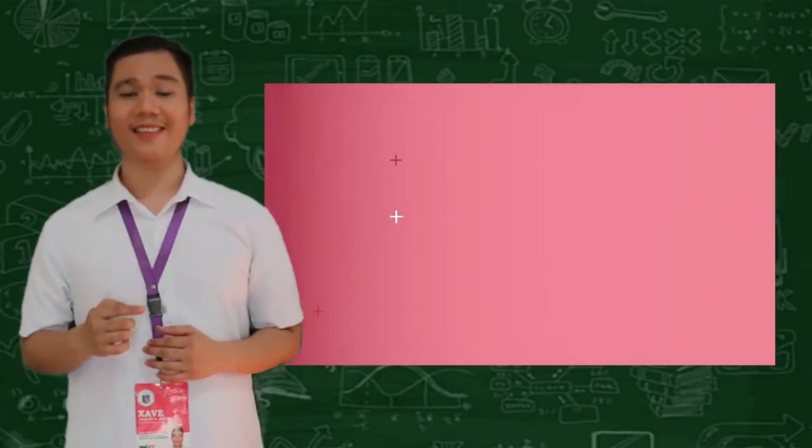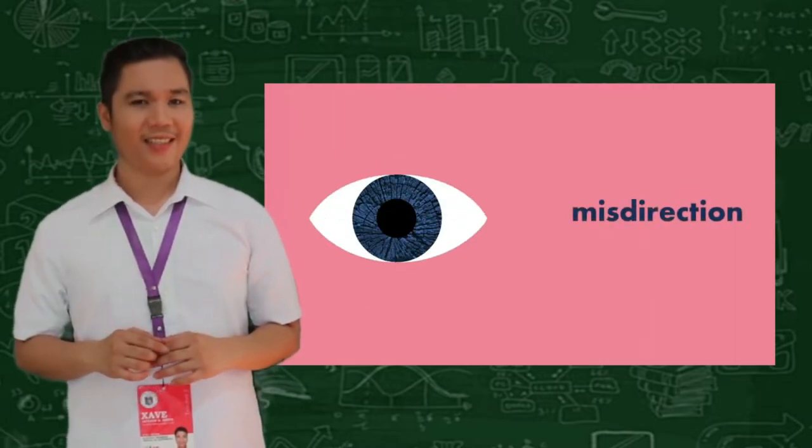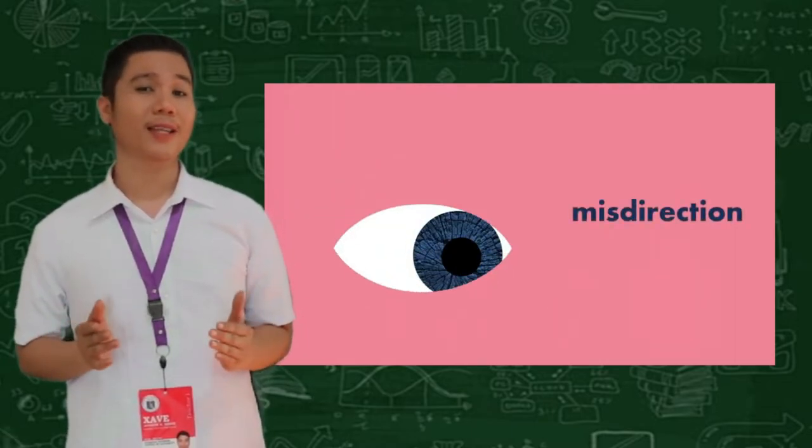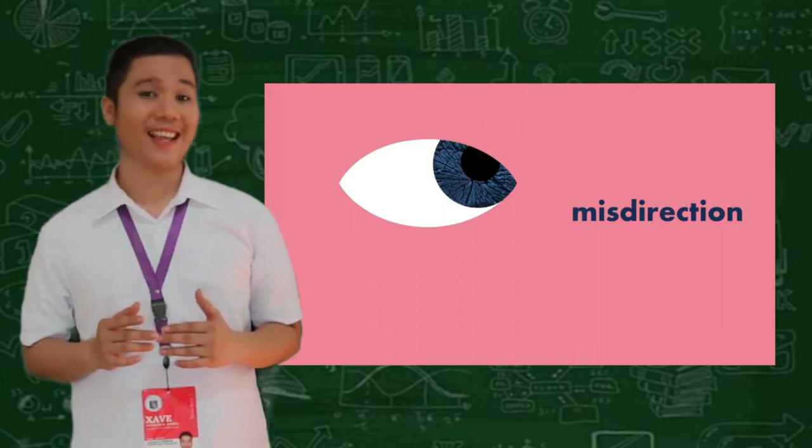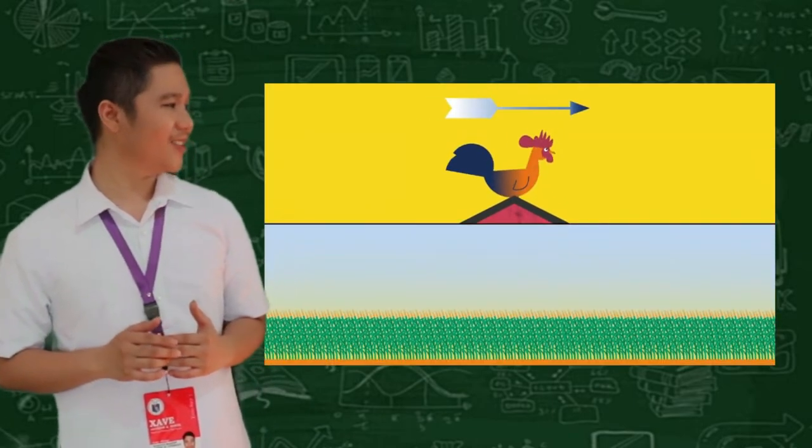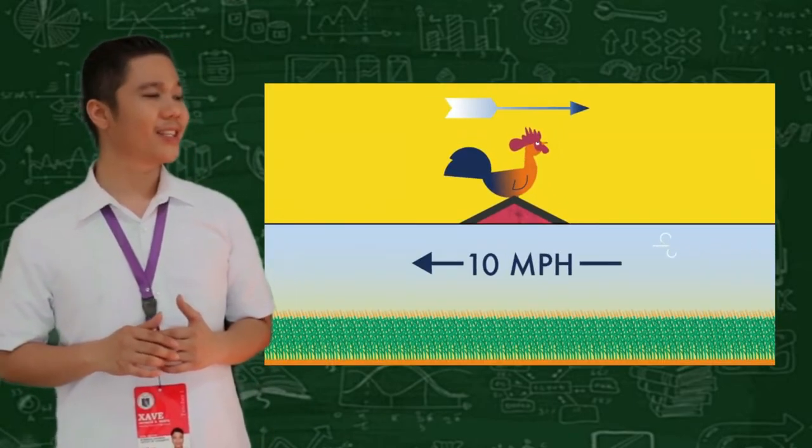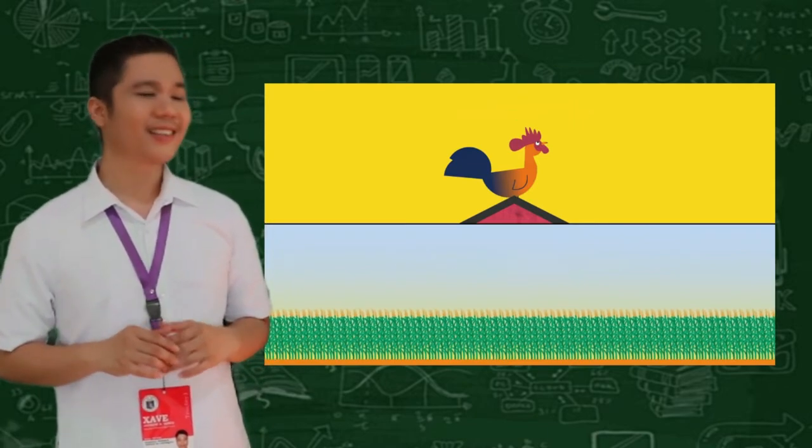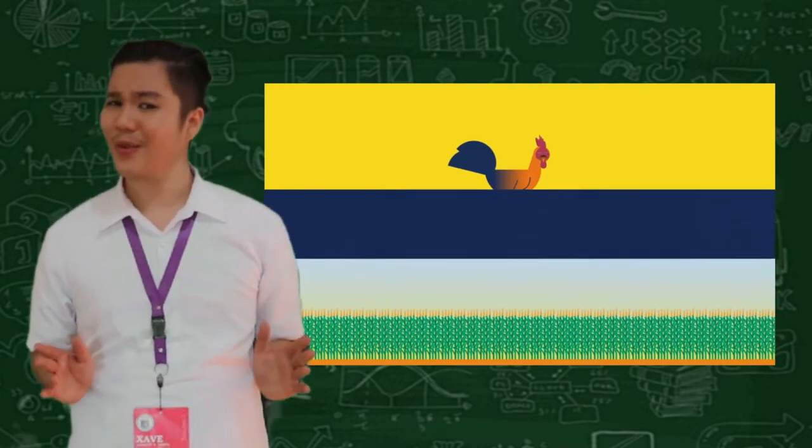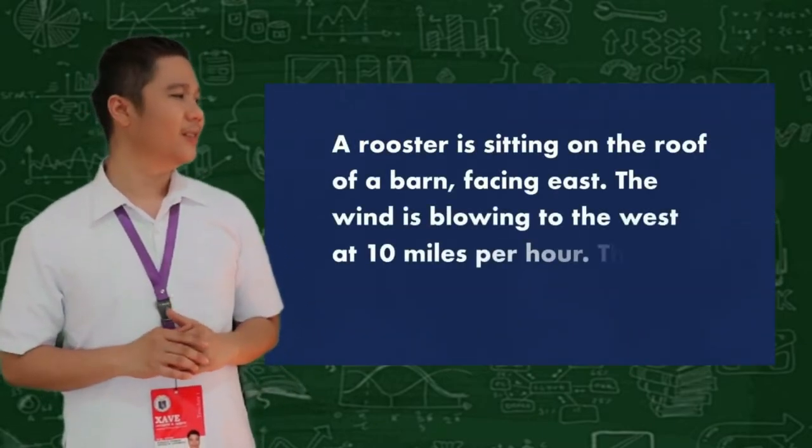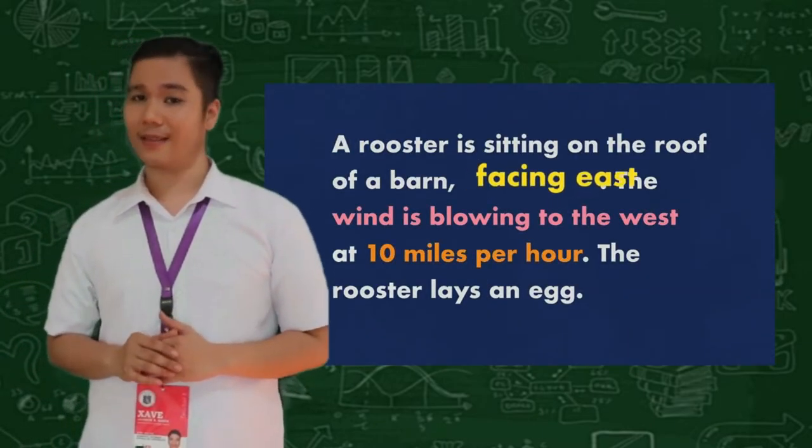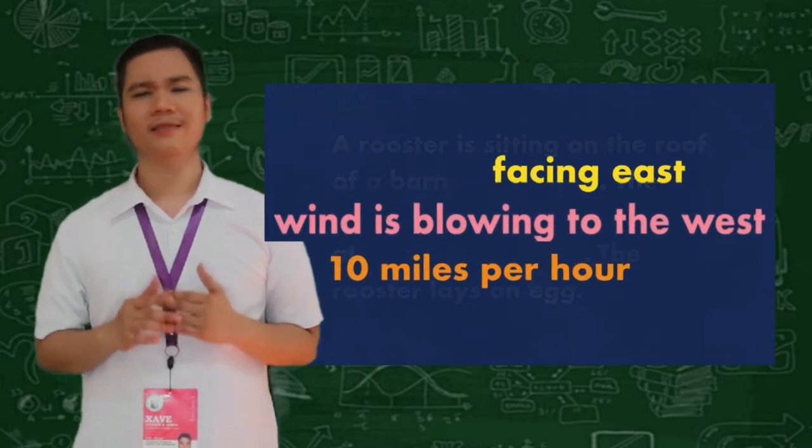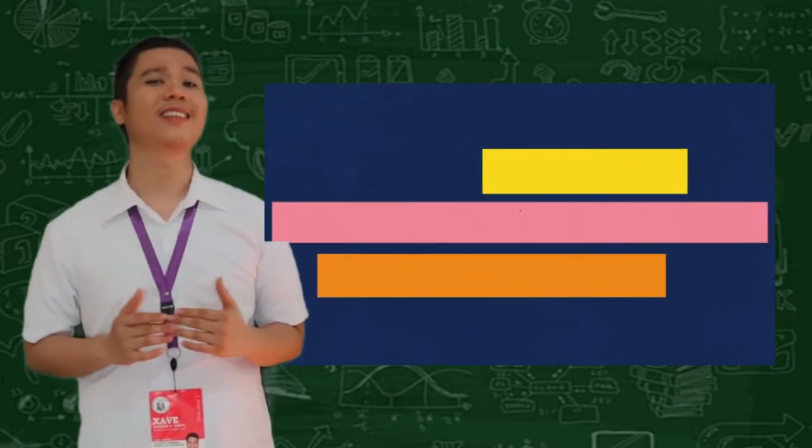Another process at work in this brain teaser is misdirection. There were several details included that we may have paid too much attention to. The fact that the rooster is facing east and that the wind is blowing west at 10 miles per hour. In the end, these details had nothing to do with the actual answer. But, because they seemed important in the context of the brain teaser, they directed us away from the relevant information.